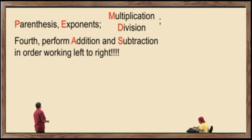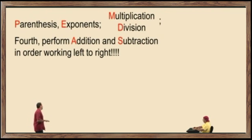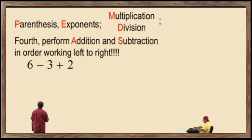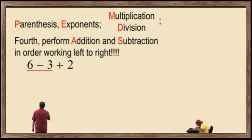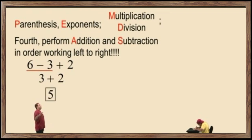Now we have the fourth step: perform addition and subtraction in order, working left to right, whichever comes first. And those are all four categories of the order of operations. Let's look at this problem — we have a subtraction and an addition. Working left to right, subtraction comes first, so we perform that operation first. 6 subtract 3 is 3, and 3 plus 2 is 5.